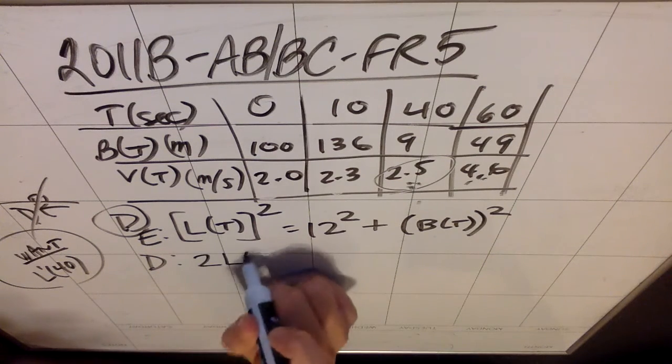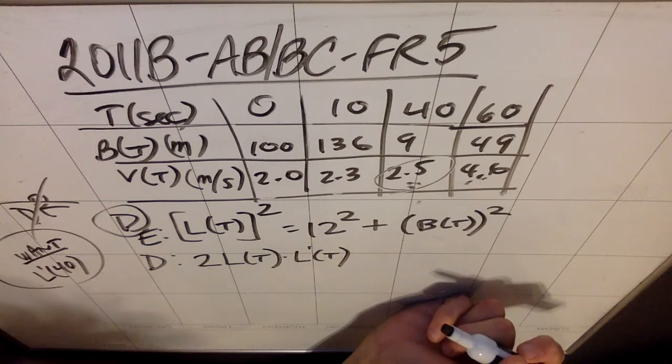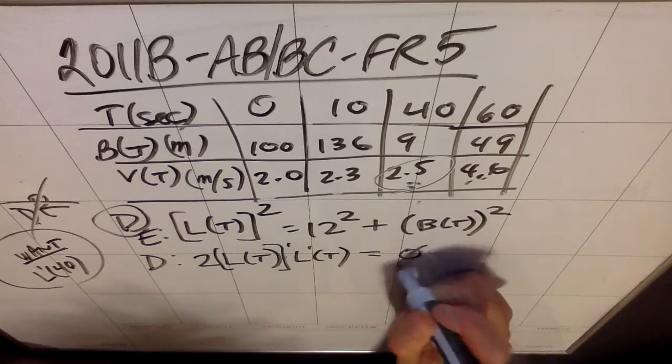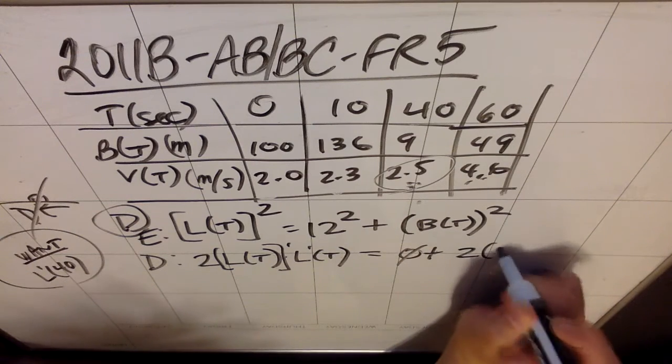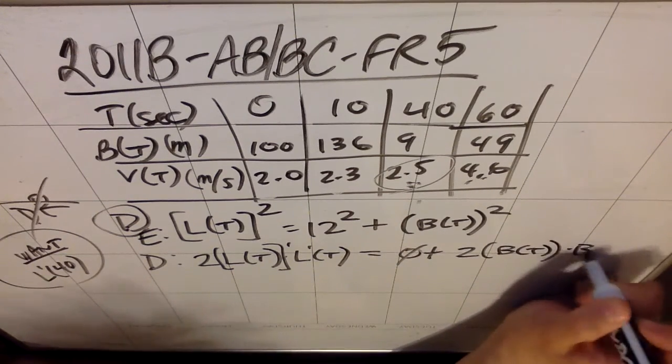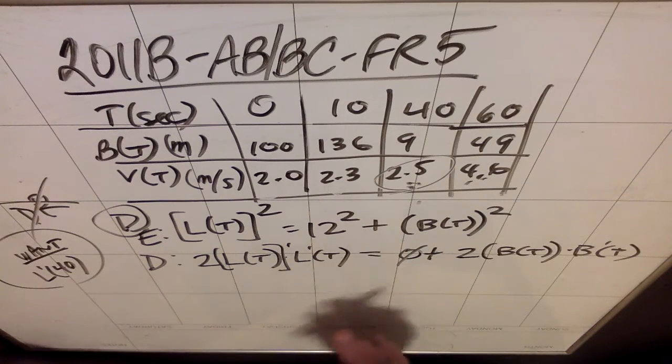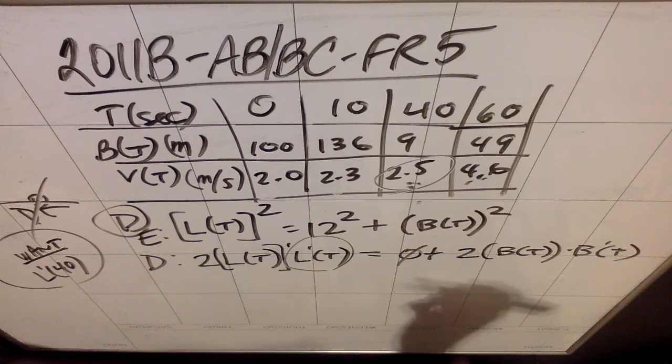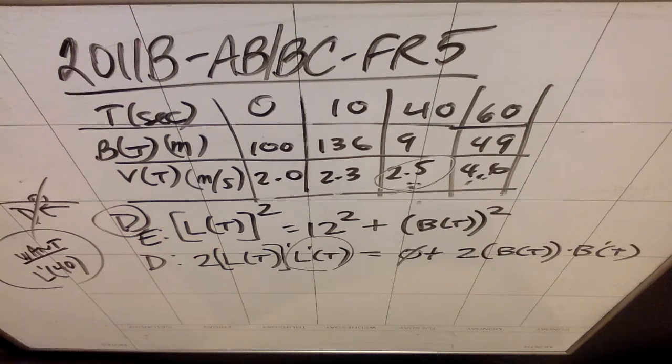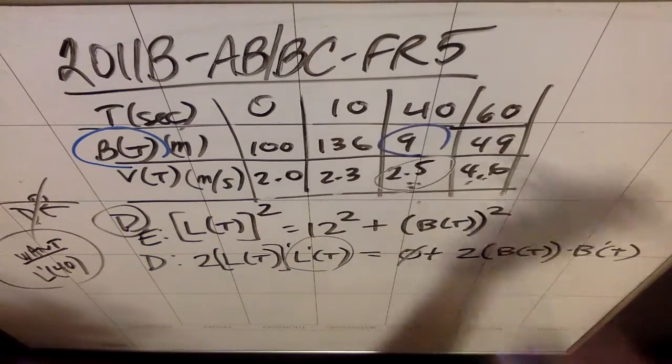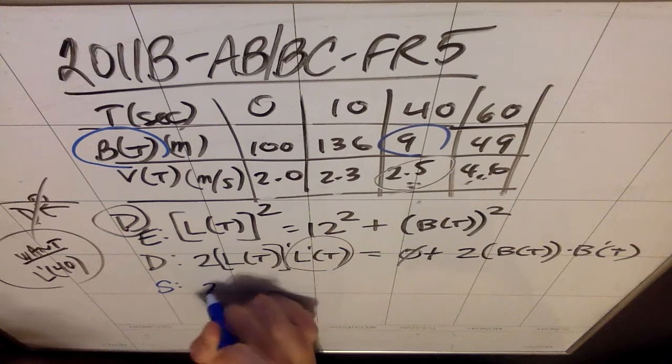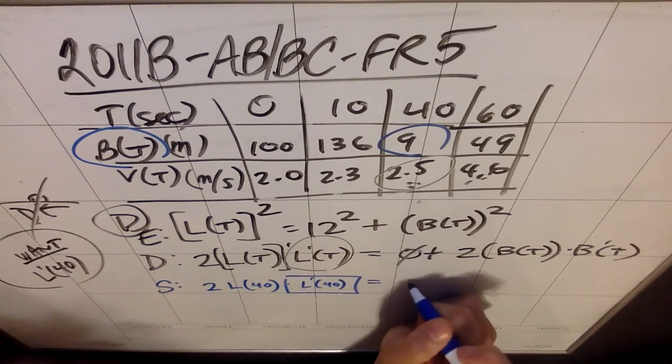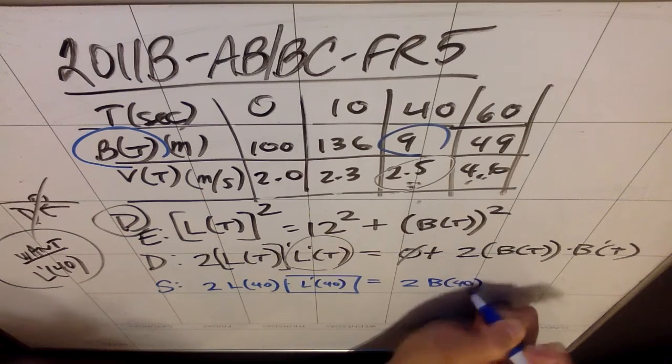This is a chain rule. It's going to be 2L(t) times L'(t). When I derive the 12 squared, it's gone, so that's nice. And then the B(t) derivative is going to go the same way. It's going to be plus 2 times B(t) to the first times the derivative of B. If I want, I can solve for this guy. This is the thing that I want. My argument is that I know everything else. When I go to substitute in, I'm going to get 2 times L(40) times this thing, and this is definitely the thing I'm solving for, equals 2 times B(40) times B'(40). B(40) is on the table. It's a 9. B' is the same as V. So B'(40) is 2.5.